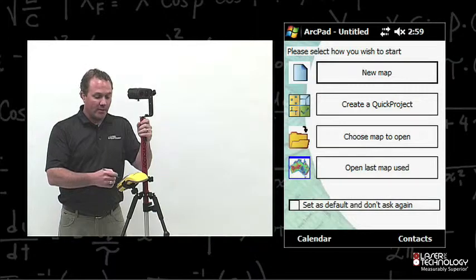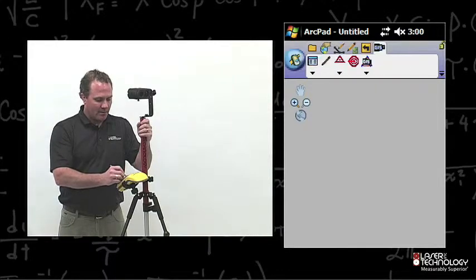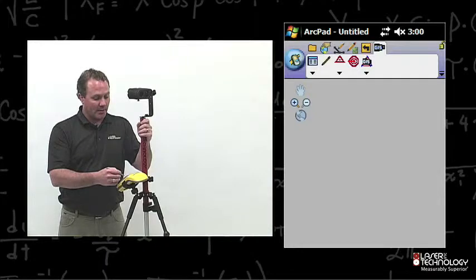Once we get to the new map, you're going to notice the LaserGIS icon on the top toolbar. Go ahead and tap the LaserGIS icon, and this is where we're going to set up the preferences for LaserGIS.